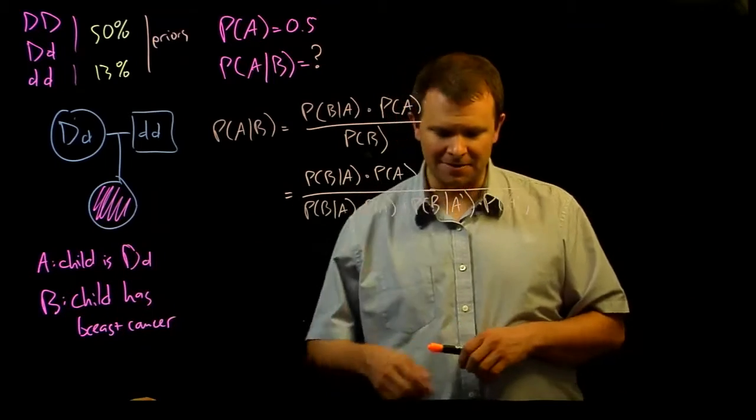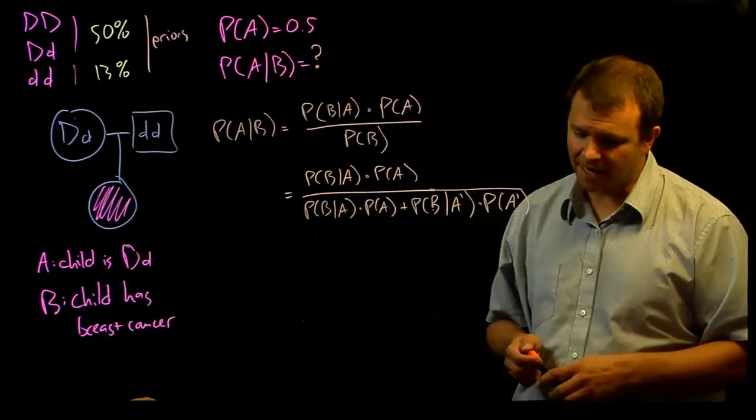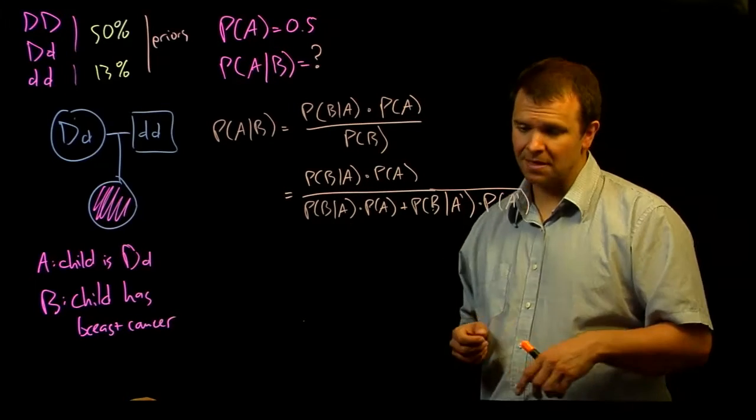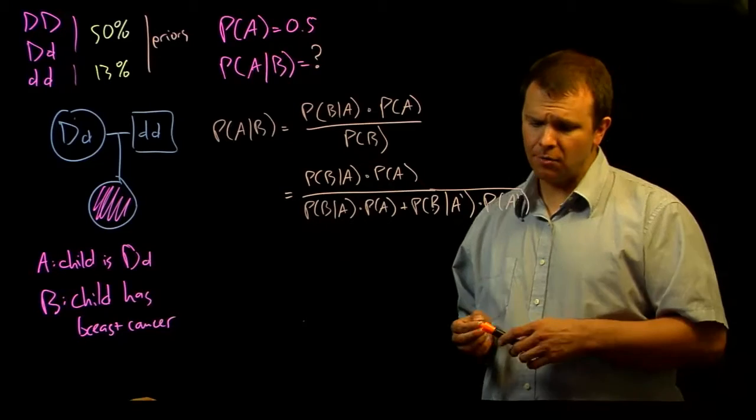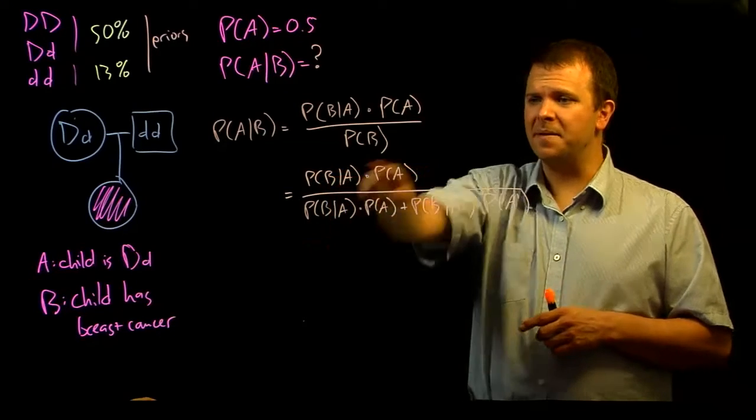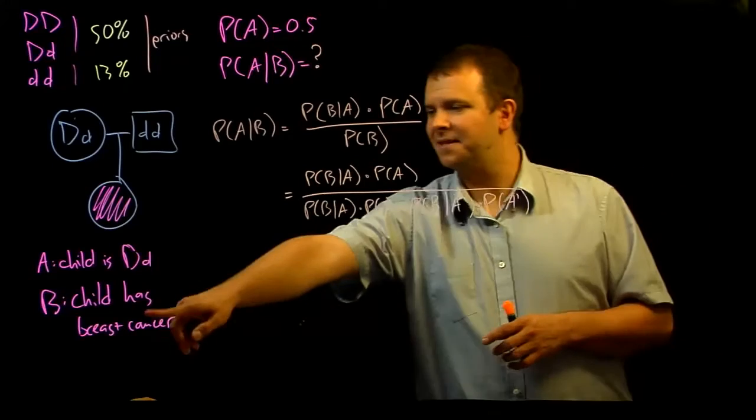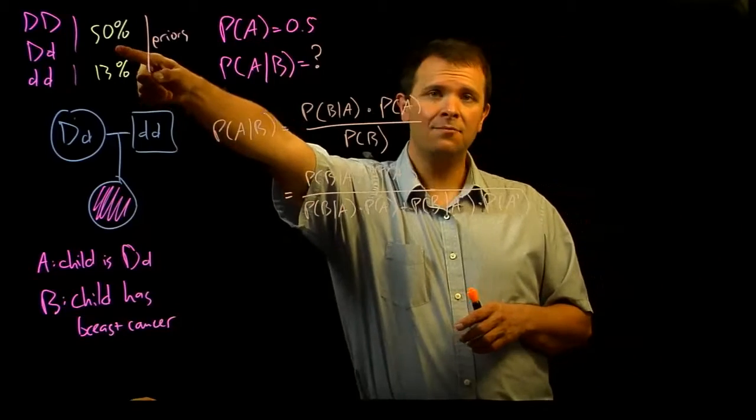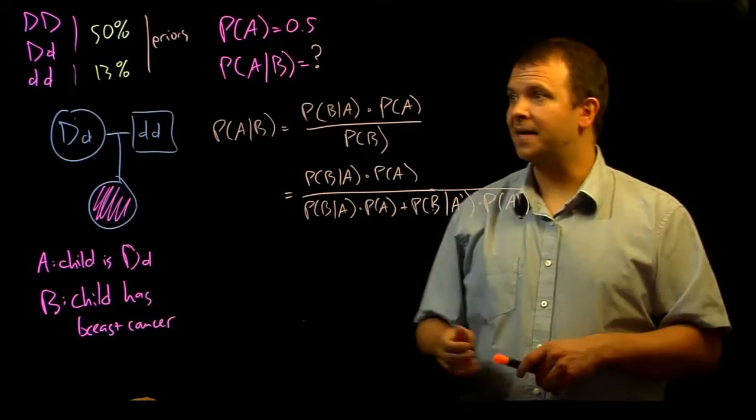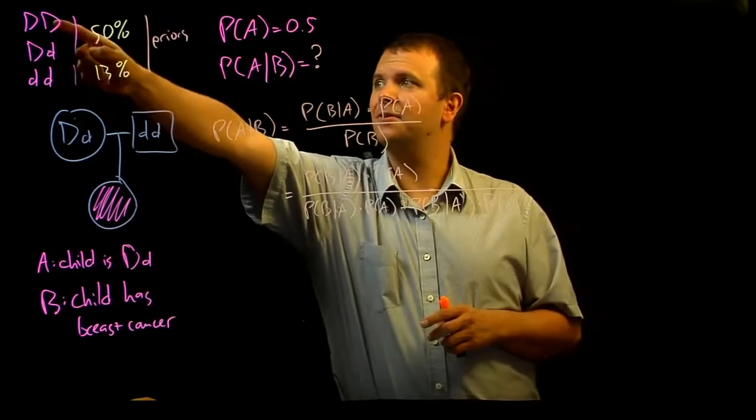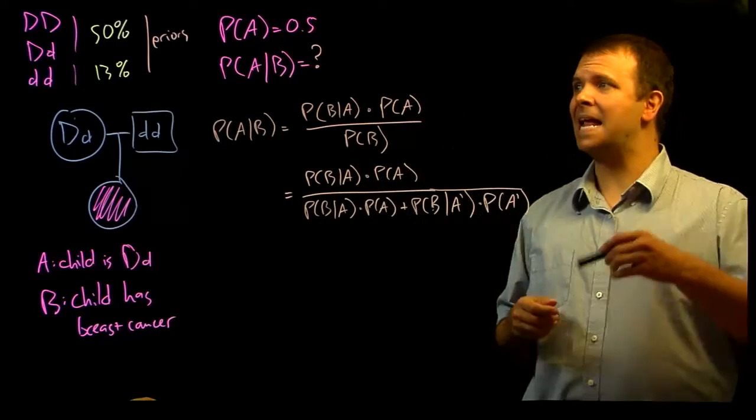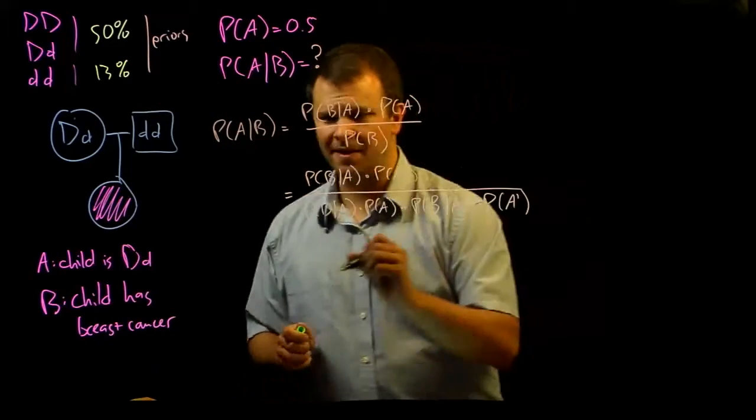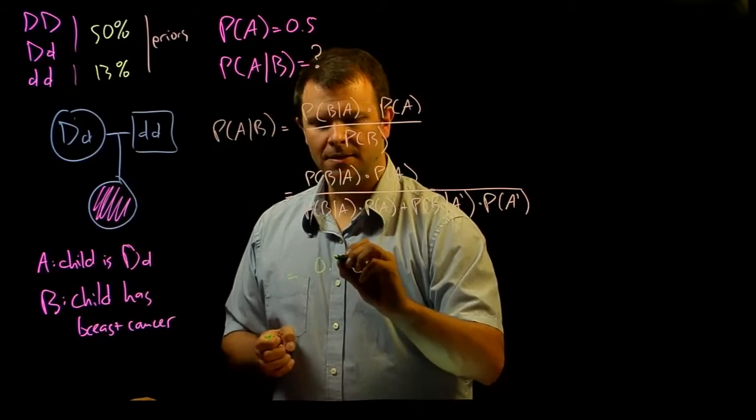We already have those defined in this scenario. The event A is that the child has this genotype big D little d, they're the heterozygote, and the event B is that the child eventually develops breast cancer. So we know the probability of B given A. We know the probability that the child will develop breast cancer given that the child is a heterozygote because we got that from the problem definition. We know that somebody who is heterozygous or who is homozygous has a 50% probability of developing breast cancer over their lifetime. And so that's 0.5.